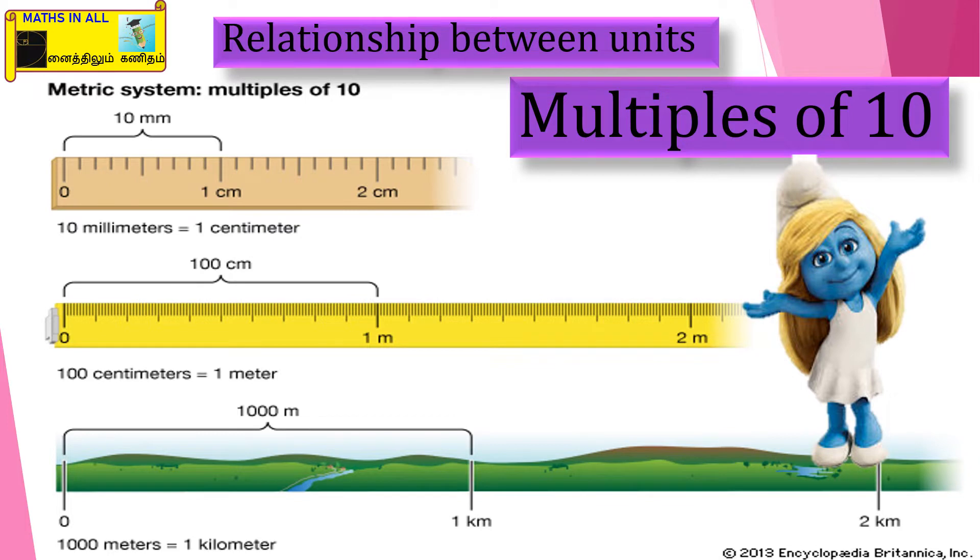Multiples of 10. Yes, this is the relationship between units - millimeter, centimeter - we have already learned these units, isn't it? Just have a glance: 10 millimeter equal to 1 centimeter, 100 centimeter equal to 1 meter, then 1000 meter equal to 1 kilometer. So these four are very important and we often use them. You have to learn this, very important.